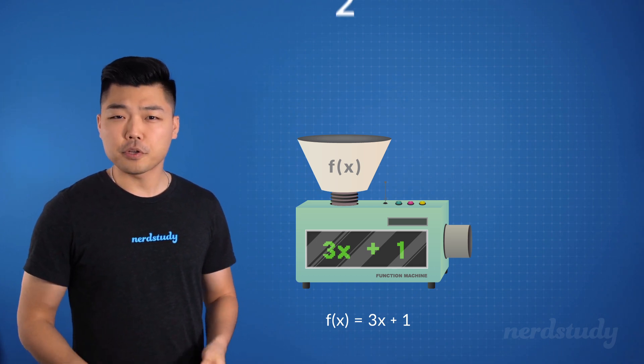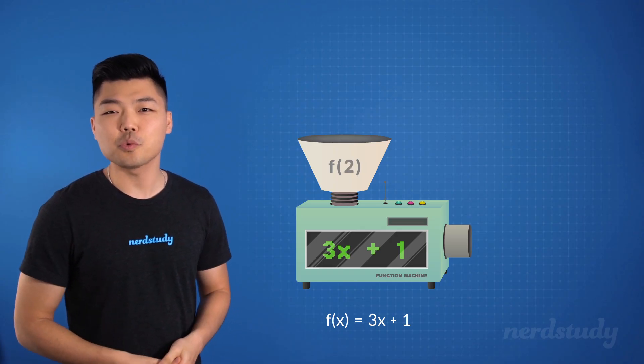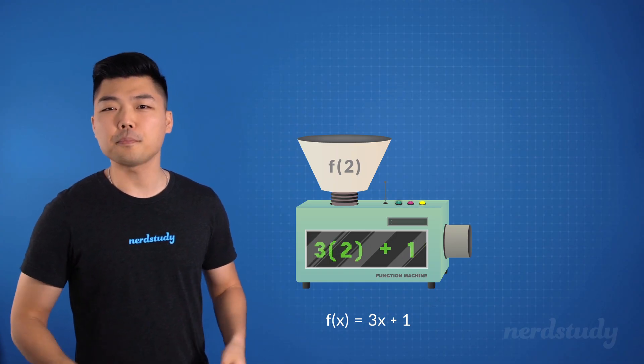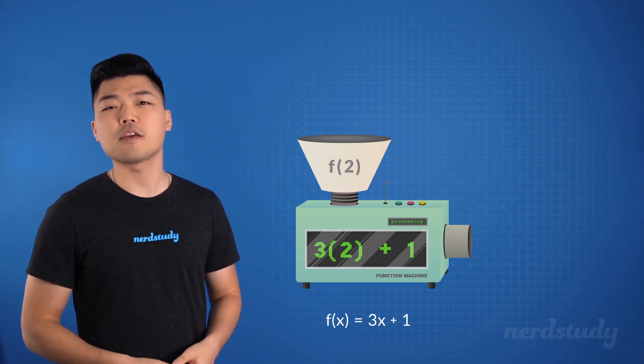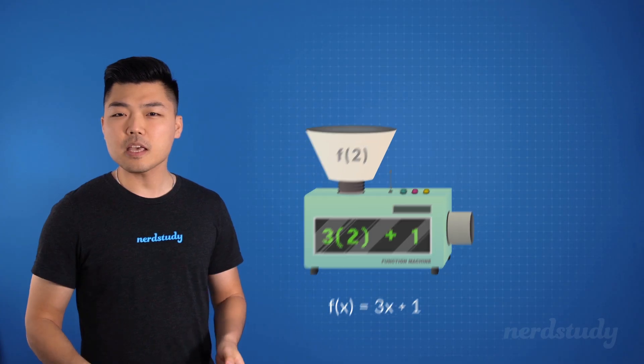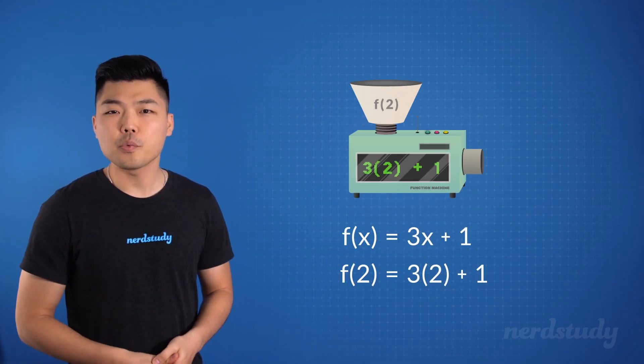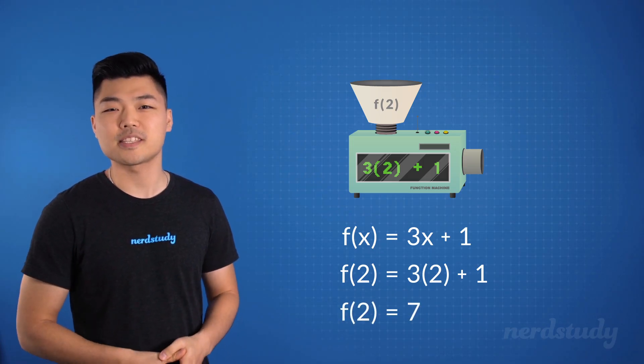So if we input 2 into f of x, the x's in the equation will be replaced by 2 as well since that is our new input. When calculated, the function outputs a final value of 7. And if we look at the same equation down here and compute x as 2, we end up finding out that f of 2 is indeed equal to 7.